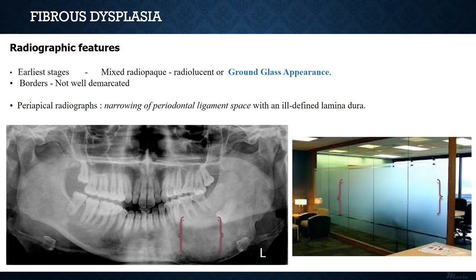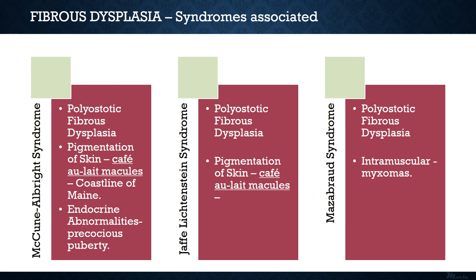The term ground glass appearance is related to the opaque glass found in various buildings, where the opacity does not allow the other side to be seen clearly — the appearance of fibrous dysplasia is similar. Fibrous dysplasia can also be seen as part of syndromes, particularly more severe polyostotic forms. The three common syndromes include McCune-Albright syndrome, Hefe-Lichtenstein syndrome, and Masabrod syndrome.